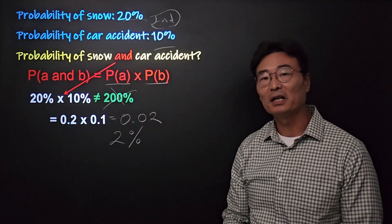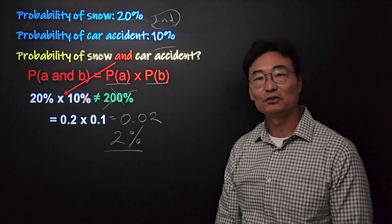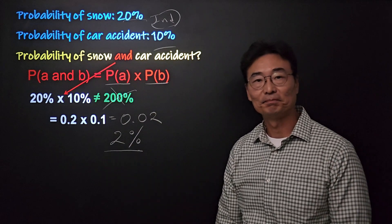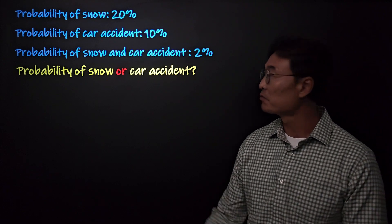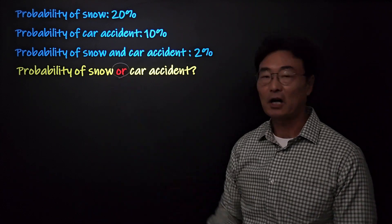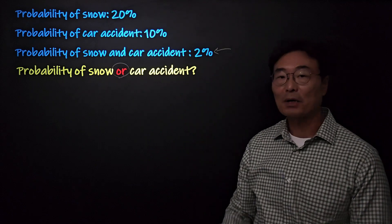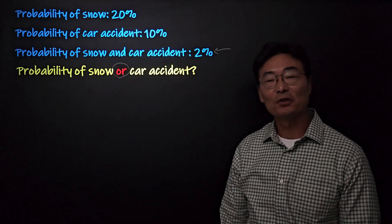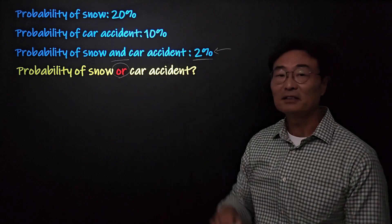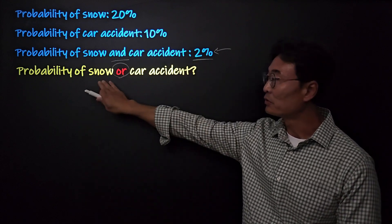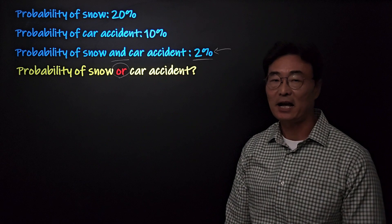So, given that the probability of snow is 20% and probability of car accident is 10%, the probability of snow and car accident is 2%. Now we're going to find the probability of snow or car accident. We've already found the probability of snow and car accident as 2%.